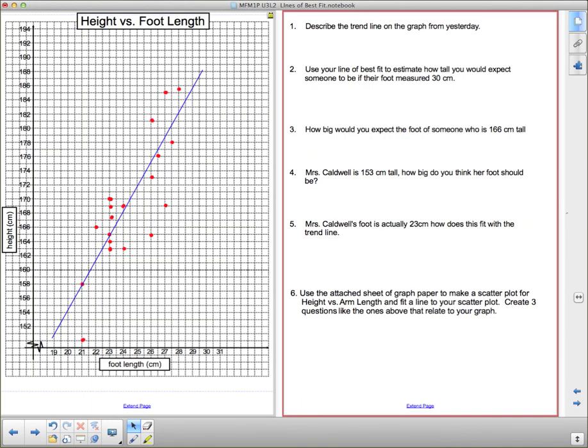Now, there are a few questions here that I want you to think about. And this is part of your homework too. And I'll be coming around so we can talk to it about it. I want you to describe the trend line from the graph yesterday. So here's the trend line. Now, some of the words you could use to describe the trend line are, it slopes up. It goes up as we move from left to right. Is it steep? Is it not so steep? Is it shallow? That kind of thing. So you want to talk about that kind of thing.